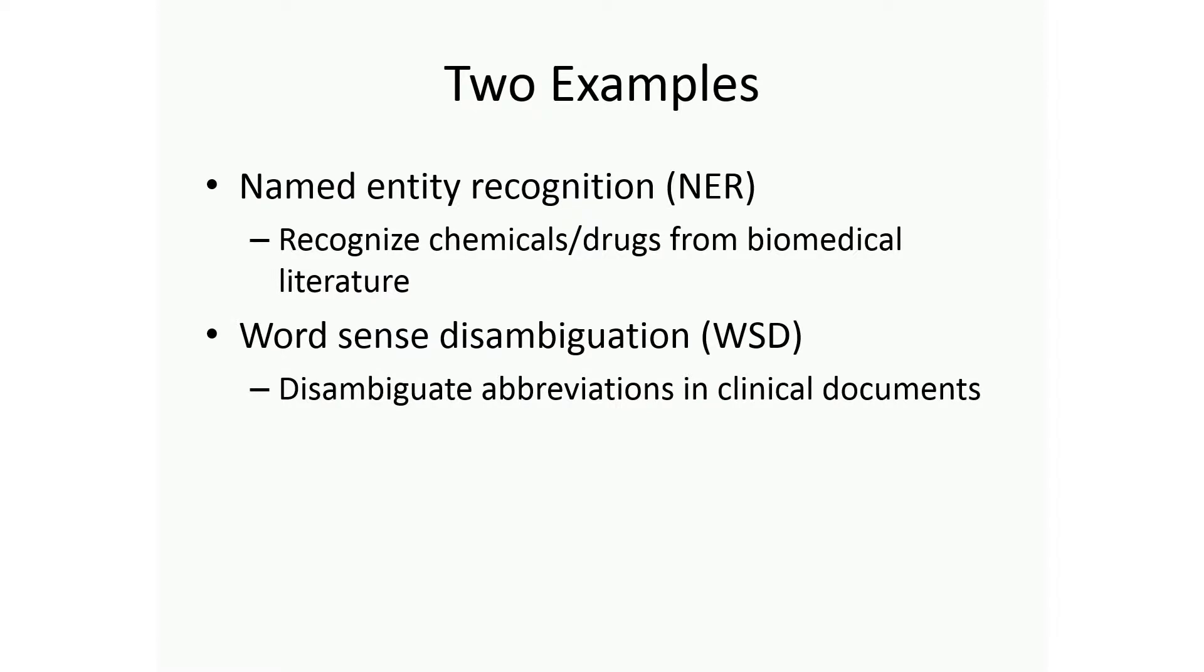The two examples I'm giving you today: one is named entity recognition. You're trying to find a specific type of entity from text. For example, I'm trying to show you how we can find chemical names from literature, what are the issues, and how you can use machine learning and other methods to find them so you can index the abstracts. The other one I'm talking about is word sense disambiguation, about ambiguity.